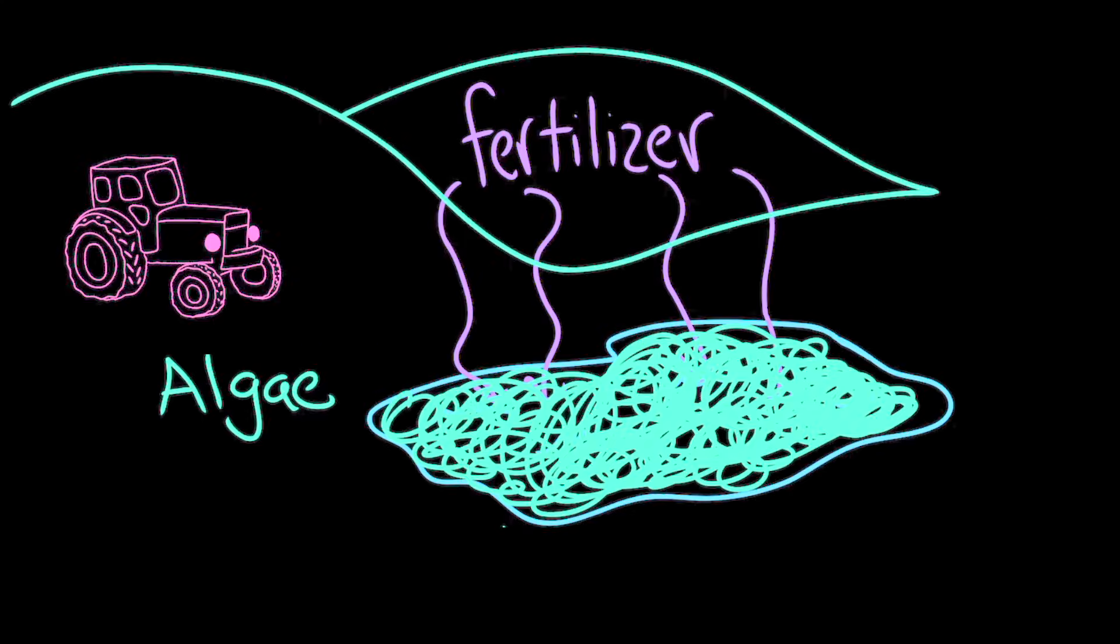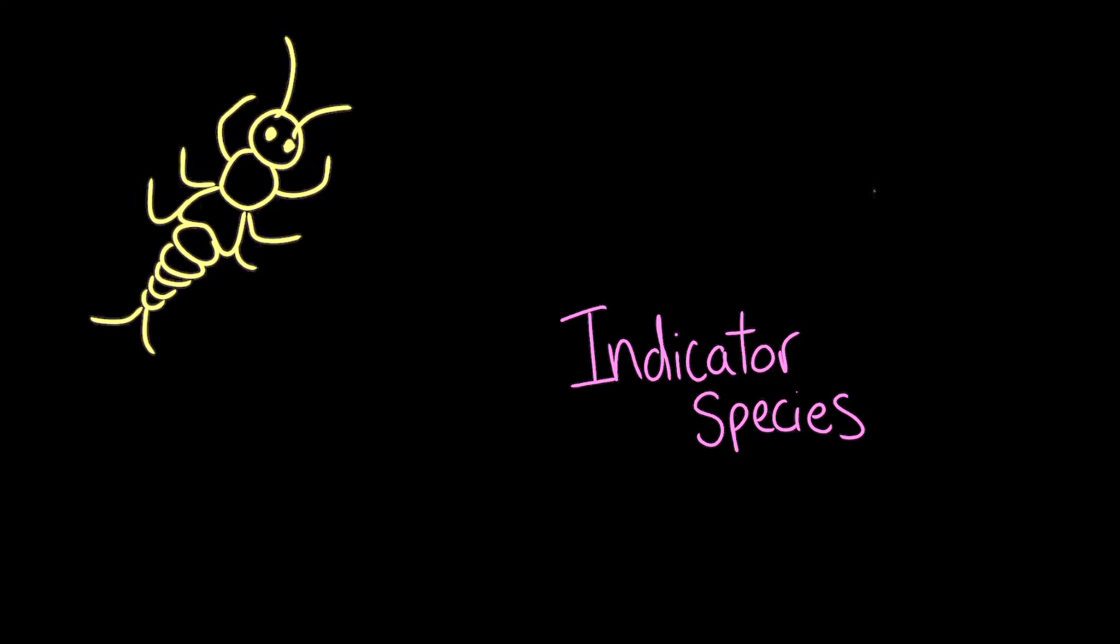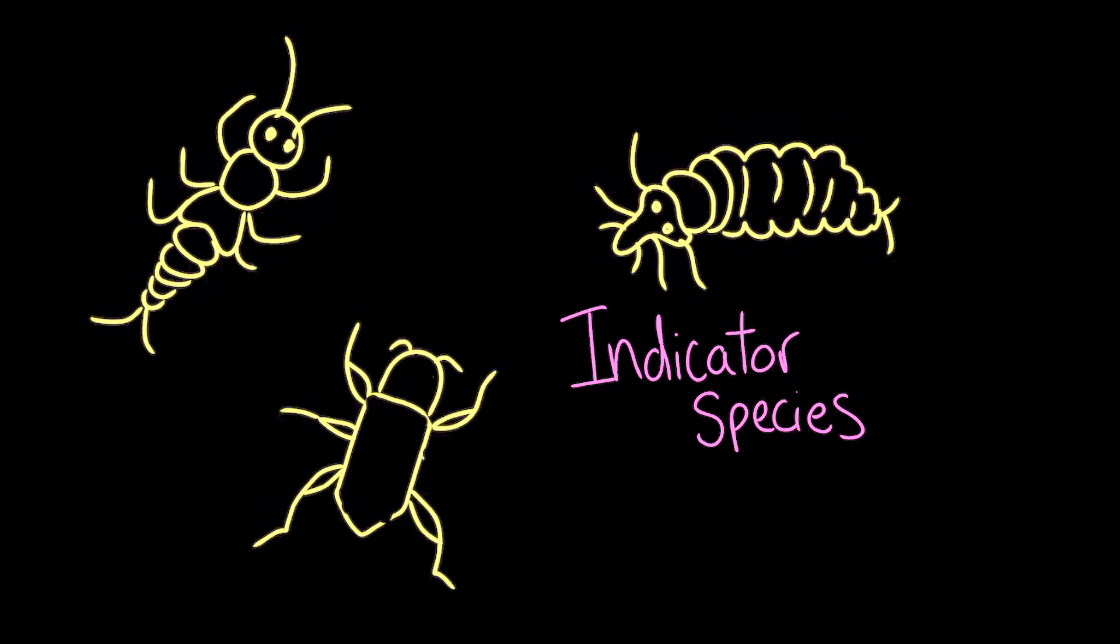The series of events triggered by fertilizer pollution could deplete the amount of oxygen in the water. So species that live in the water that require a lot of oxygen to survive could begin to die off. These species are called indicator species because they're known to survive in very specific circumstances. Spotting these species is an indication that there is a lot of oxygen in the water. If these species are absent, then that will be an indication that the pollution has reduced the amount of dissolved oxygen in the pond.